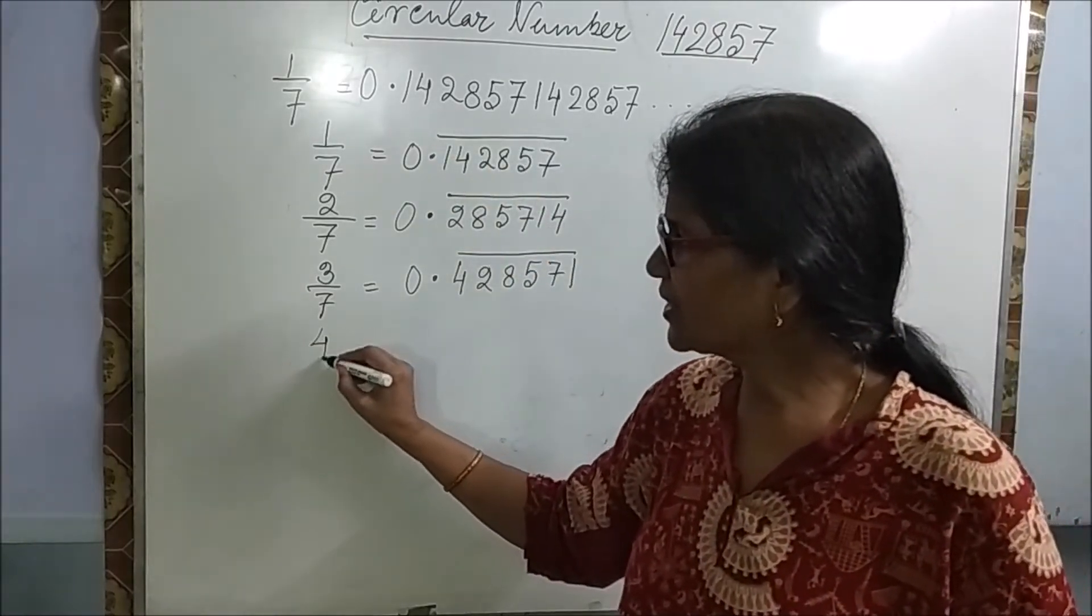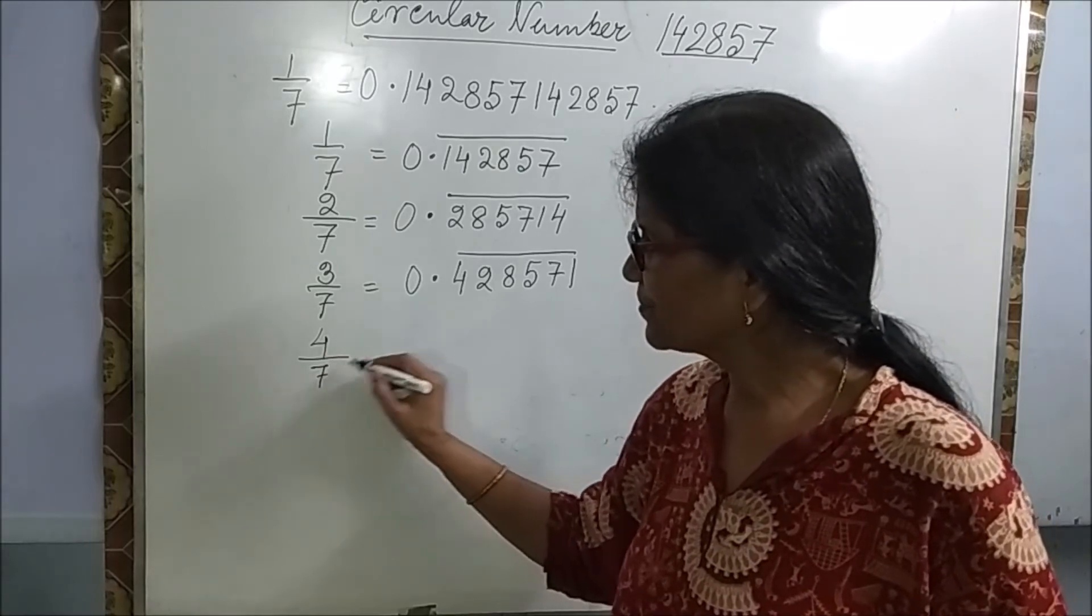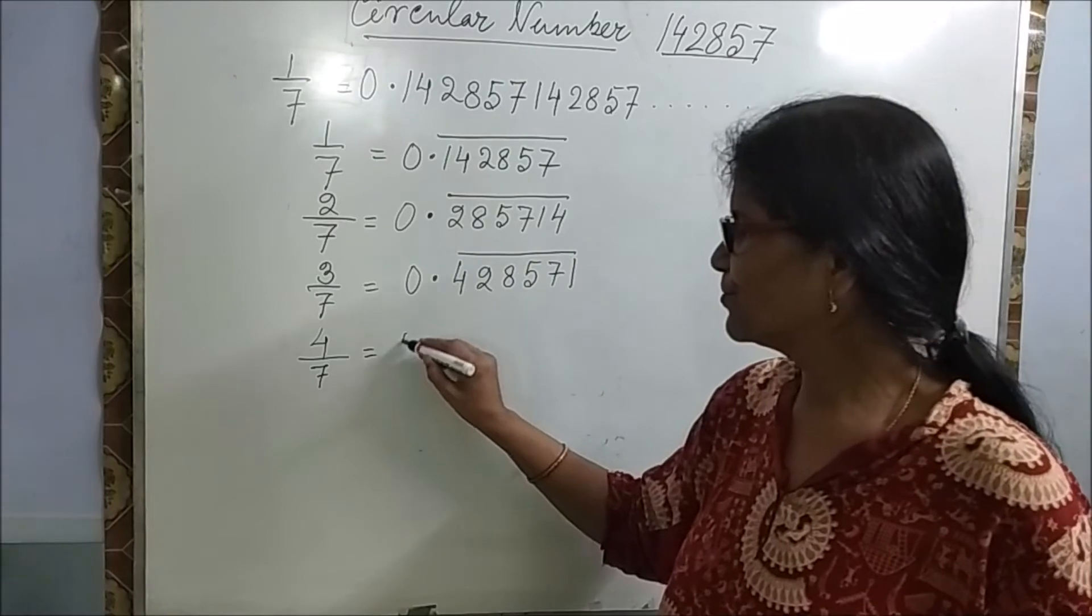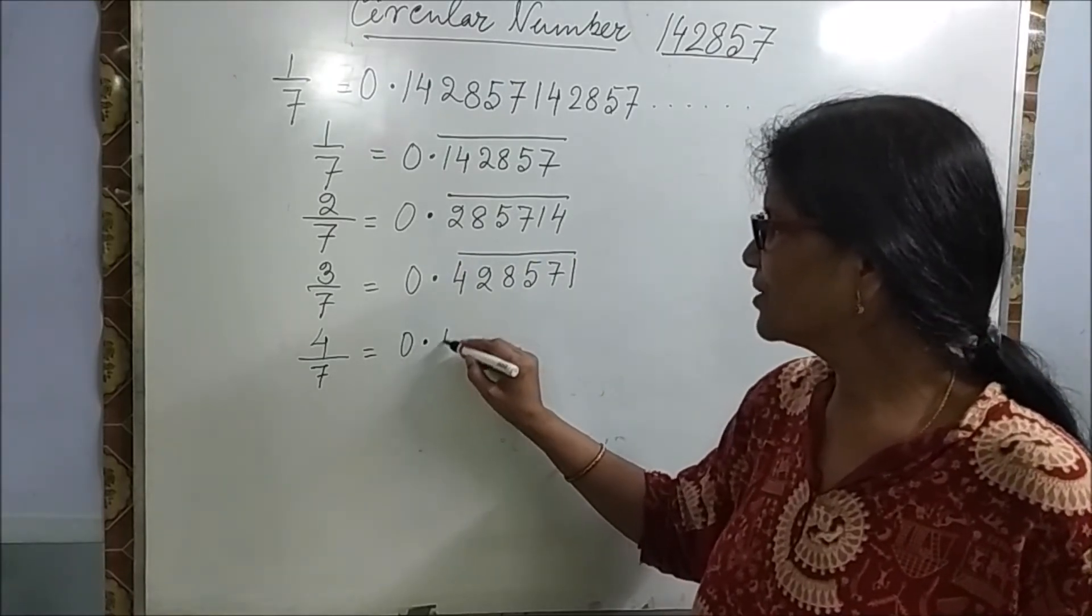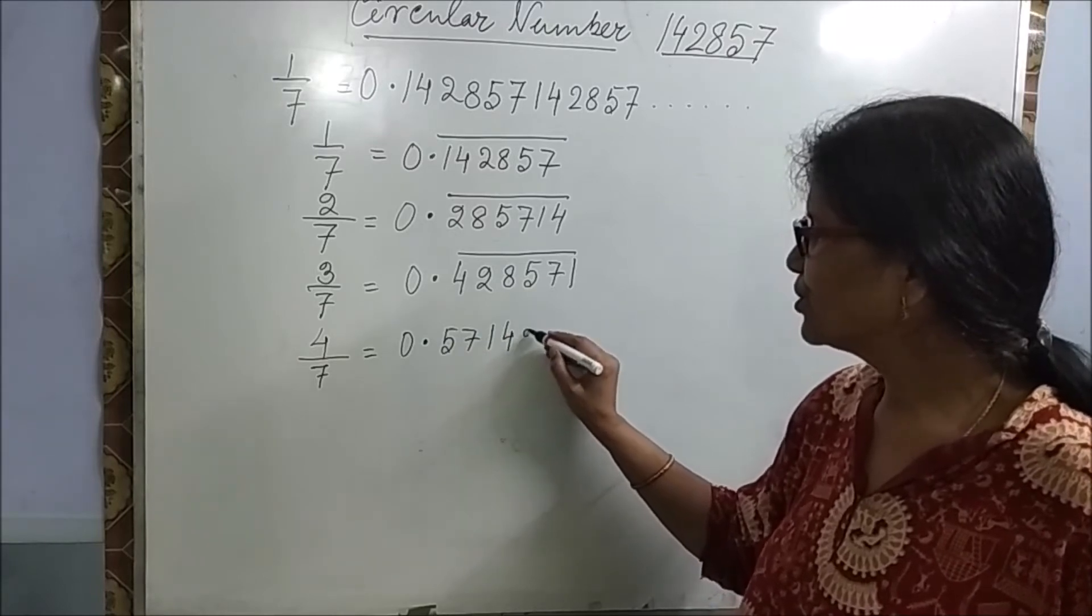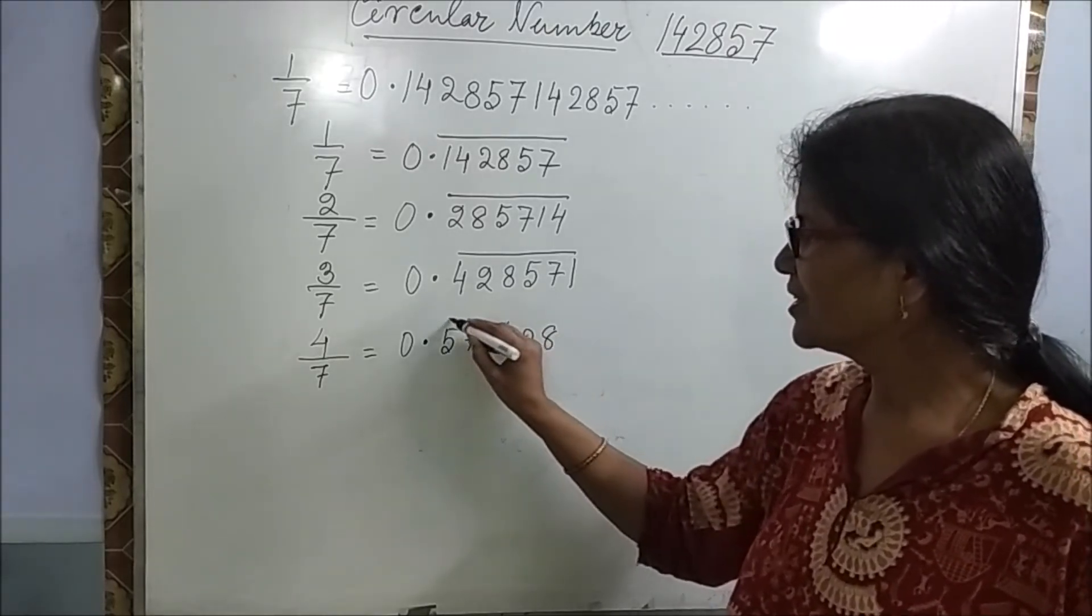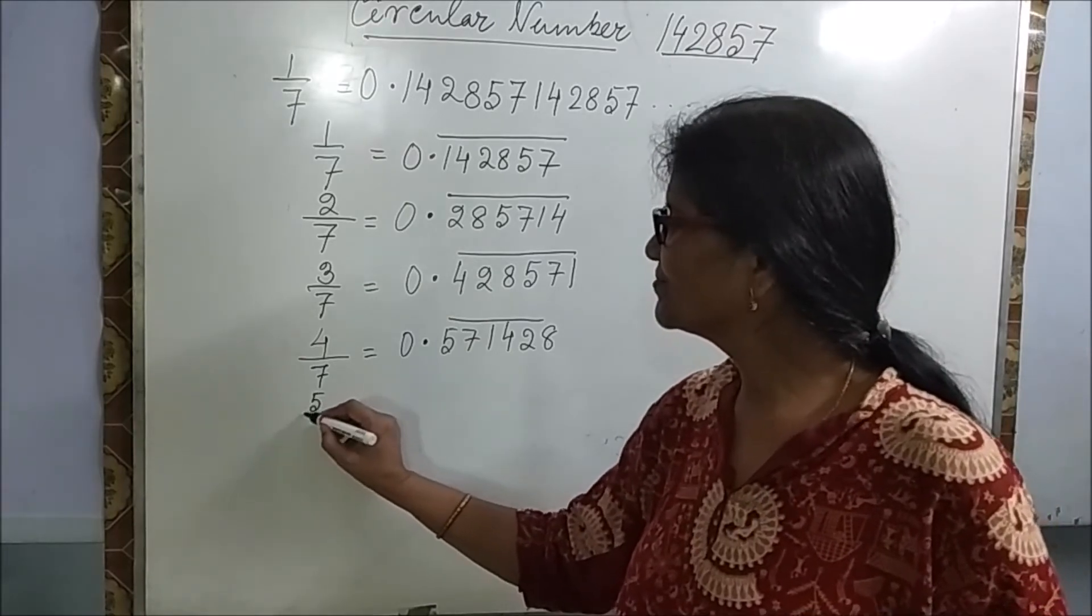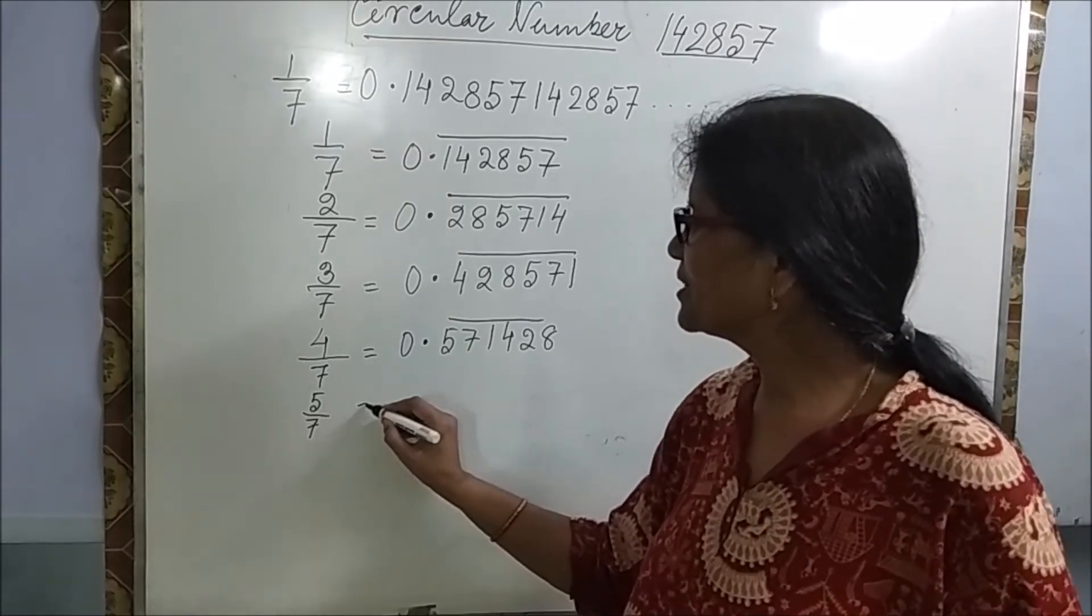Next is if I write 4 by 7, 4 by 7 it will be? It will start from 5. 0.571428. You guess for 5 by 7.